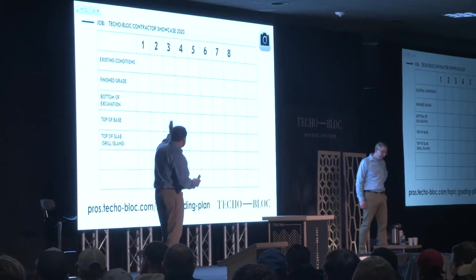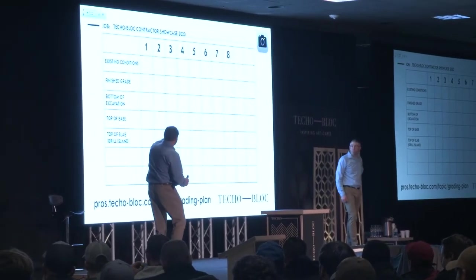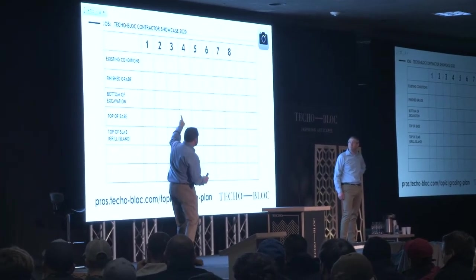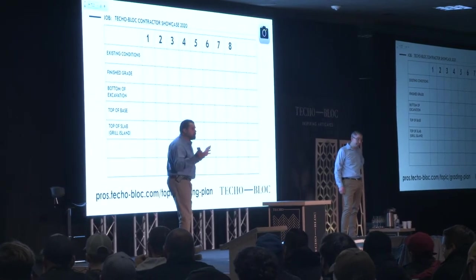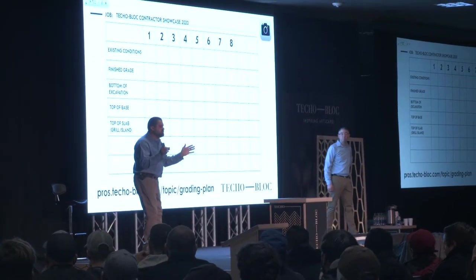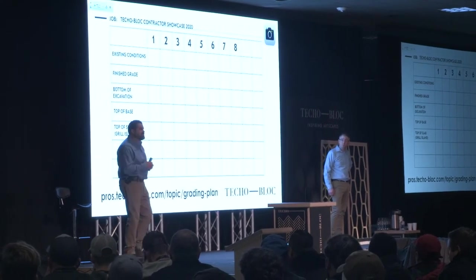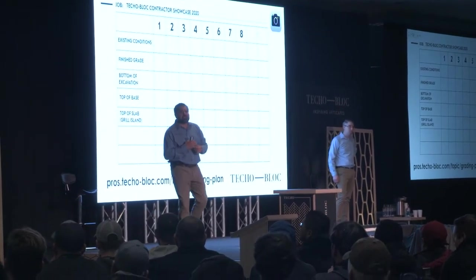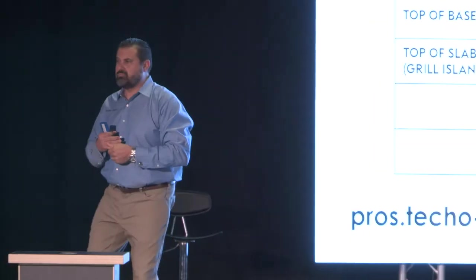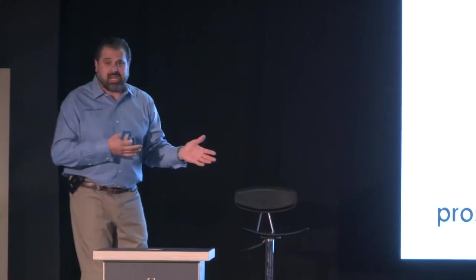Stake number one is typically the benchmark — zero zero. That's our elevation at the threshold of the house. The first two rows are existing conditions and finished grade. Who gives us that data? Sales and design give us that information — and they did. We just didn't double-check it.